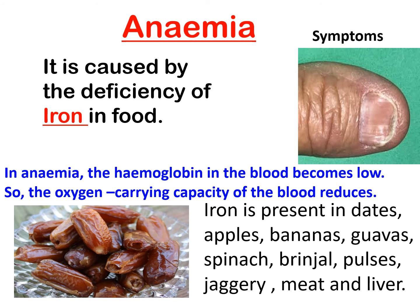Anemia is caused by the deficiency of iron in the food. In anemia, the hemoglobin in the blood becomes low, so the oxygen-carrying capacity of the blood reduces. Hemoglobin is a red-colored pigment present in our blood, essential for the transport of oxygen. Iron is present in dates, apples, bananas, guavas, spinach, brinjal, pulses, jaggery, meat, and liver. So if you are anemic, you need to eat all these fruits and vegetables.